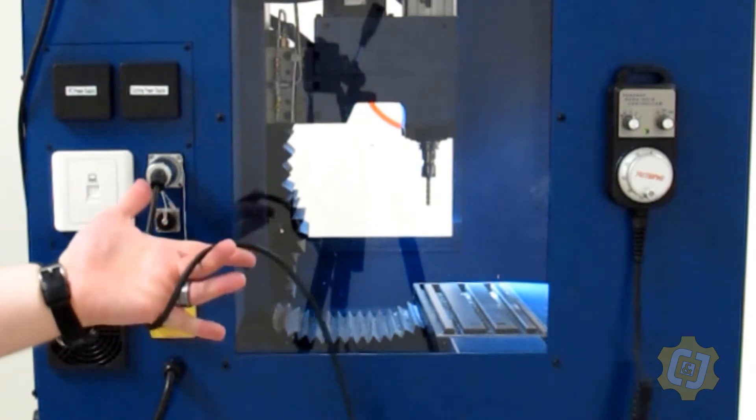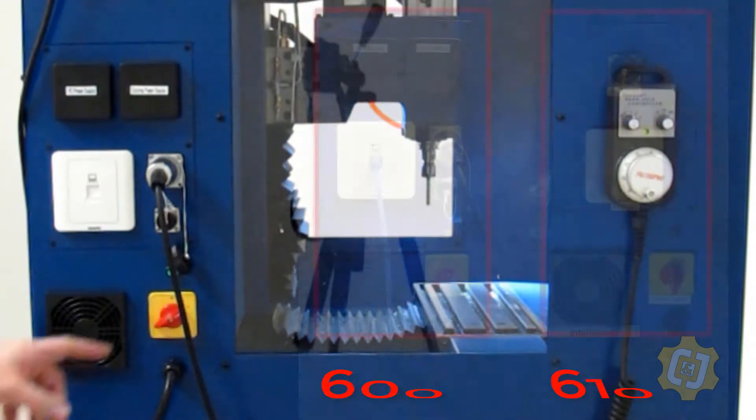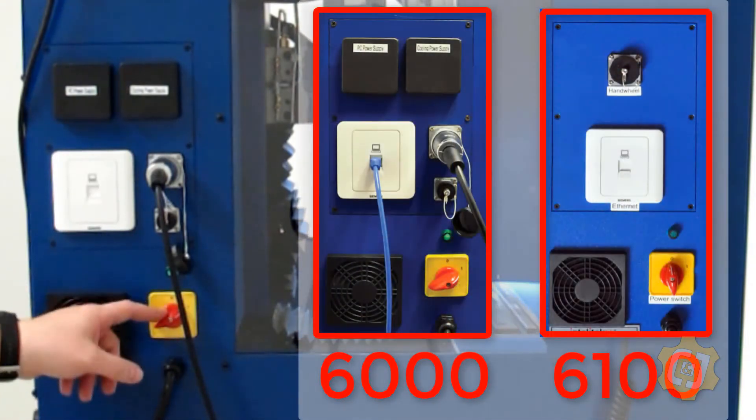Here you can also see that I have plugged in the optional jog pendant. If that's something that you purchase, it just plugs in here. And then you have your main power on and off.